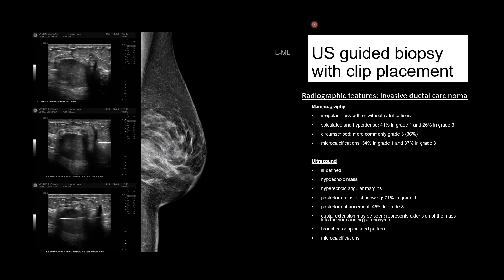We know the final diagnosis of invasive ductal carcinoma can't be made without pathology. But as a radiologist, what could we see on imaging that might lead us in that direction? Here we're looking at an ultrasound-guided biopsy with clip placement performed on the same patient, with the clip placed right in the middle of that lesion. On mammography, we're going to see an irregular mass with or without calcifications — possibly spiculated and hyperdense, circumscribed more commonly in a grade three lesion — and there may also be some microcalcifications.